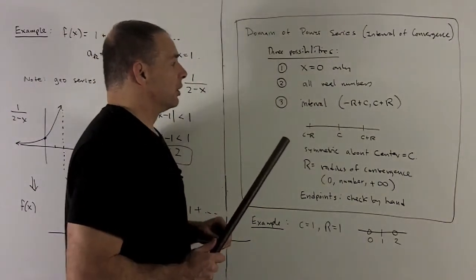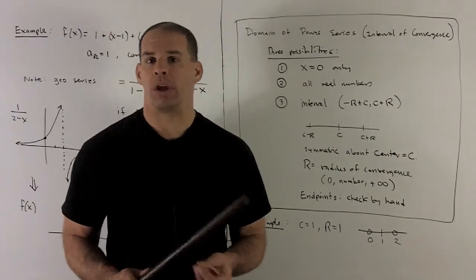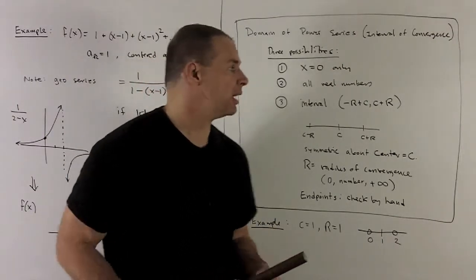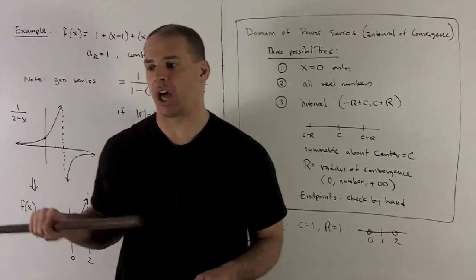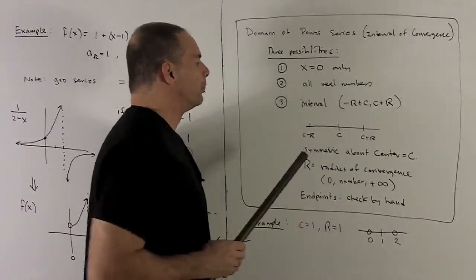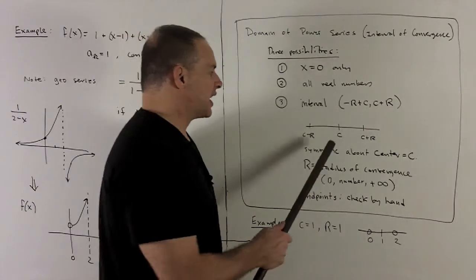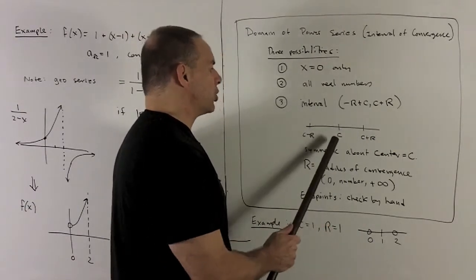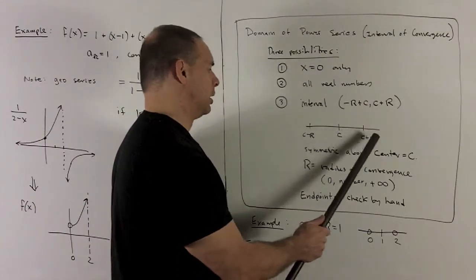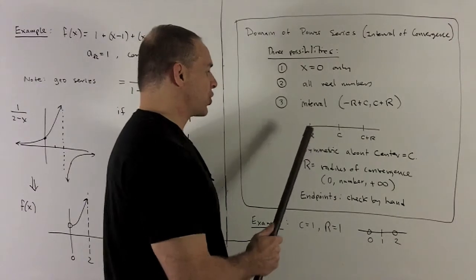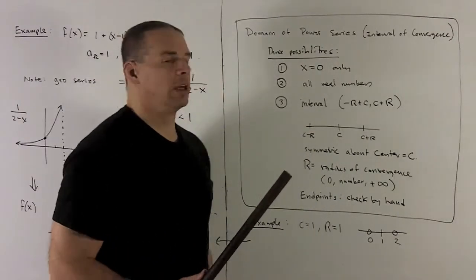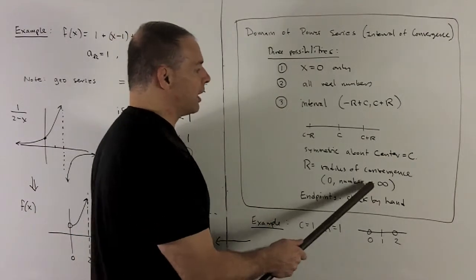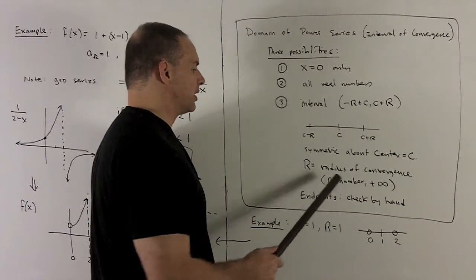Second case, going to be all real numbers. That means no matter what you put in the series, you get a sensible answer out. So, the series is always converging whenever you change x around. And then, third case, which is the case we just saw here, you're going to get a finite interval. The way the interval is going to look, you're going to have a center for your series. And then, you're going to have perfect symmetry about your center. You can go out by r or down by r in either direction. And this r is going to be called the radius of convergence. If I'm in case one, we just say that r is equal to zero. If we're in case two, we'll call it plus infinity. And then, in this third case, it's just going to be some number.